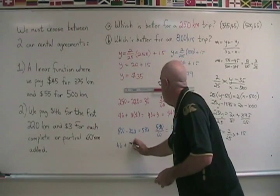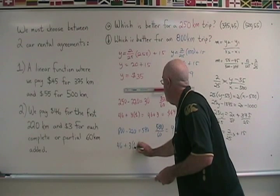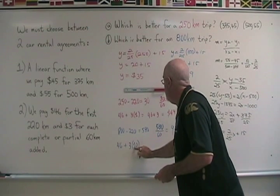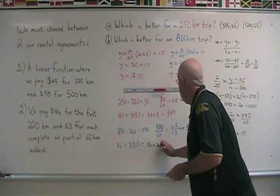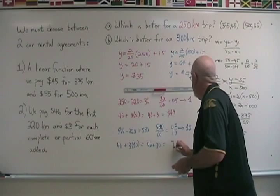Has to have $3 times 10 added to it, which is 46 plus 30, which is 76.